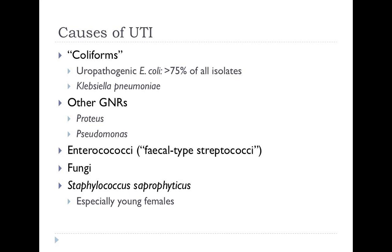The most common bacterial causes of urinary tract infection are gut organisms, particularly E. coli, which represents somewhere between 75% and 90% of all isolates in most series, followed by other coliforms and gram-negative rods. Occasionally we see gram-positives. Staphylococcus saprophyticus is particularly seen in young females, about 5% of all urinary tract infections, with other organisms more commonly seen in hospital practice than in the community.